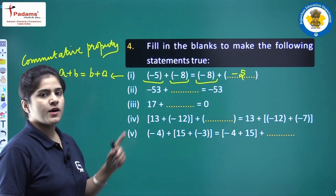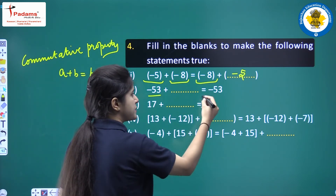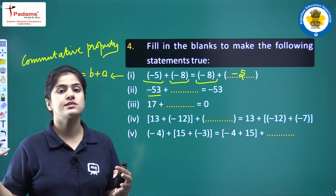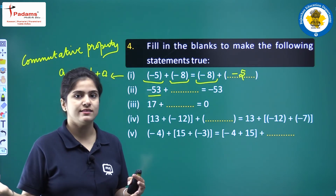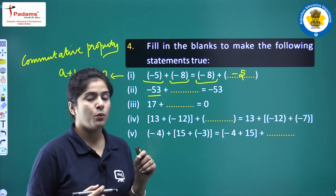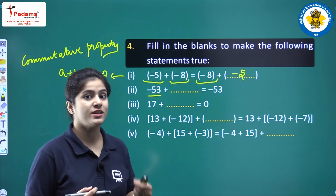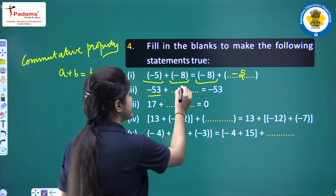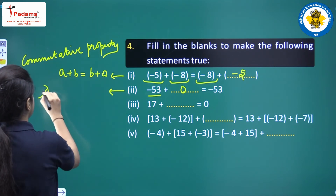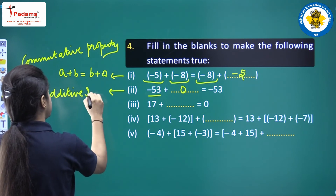Part b: minus 53 plus blank equals minus 53. By the additive identity property, zero added to any integer gives the integer itself, so the answer is 0. This is the additive identity property.